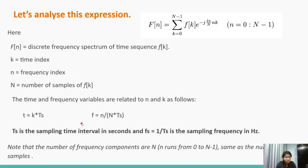Note that the number of frequency components are N, that is capital N, whereas the small n runs from 0 to capital N minus 1. This is the same as the number of samples.